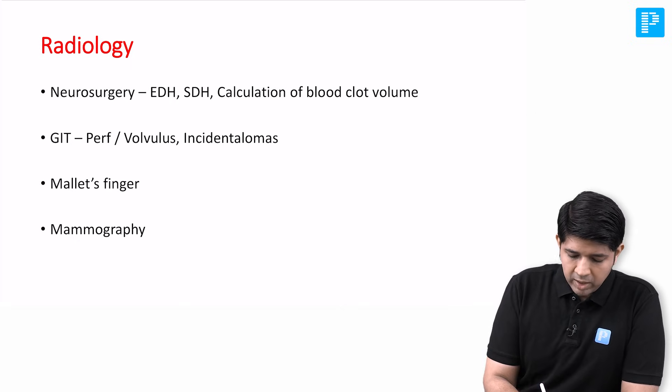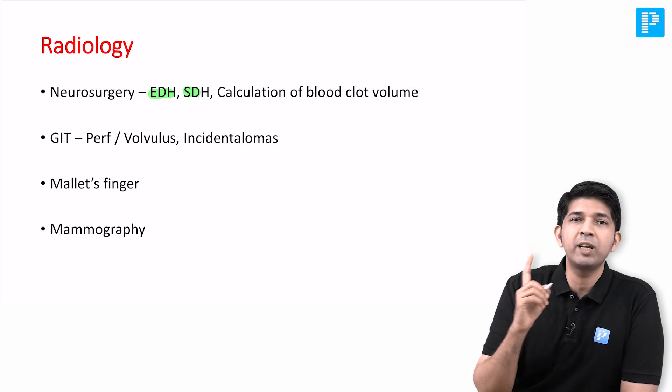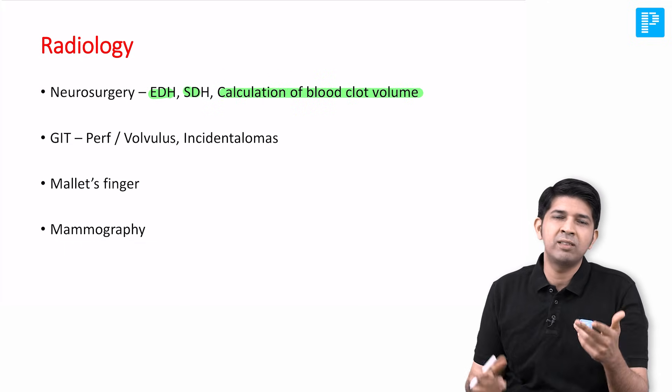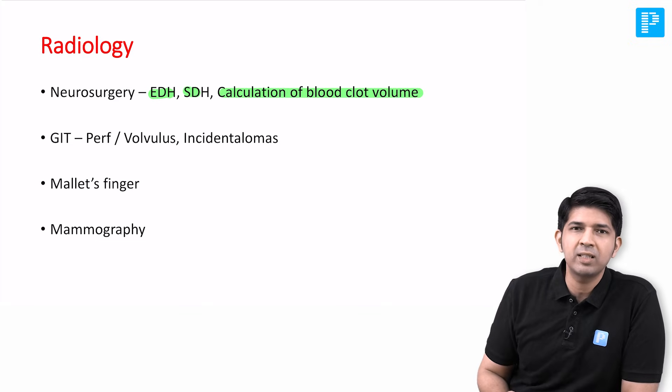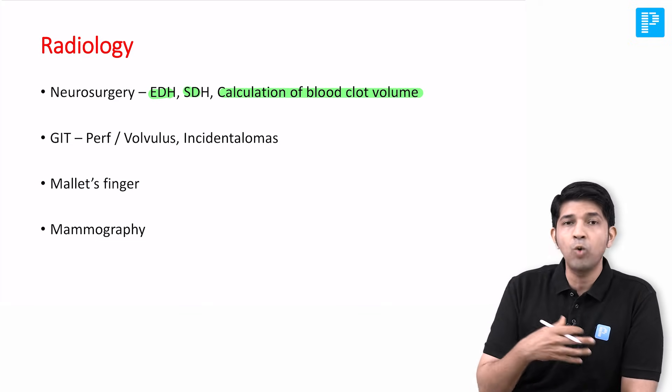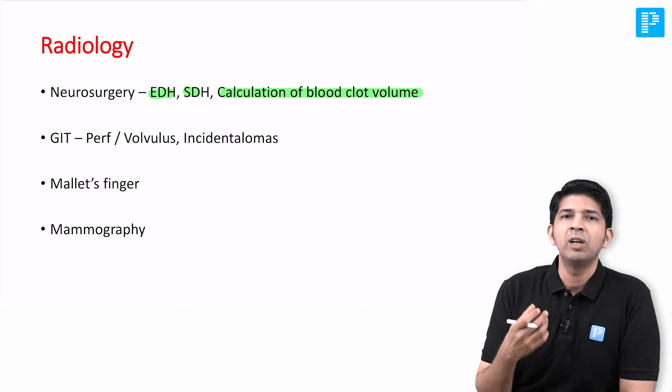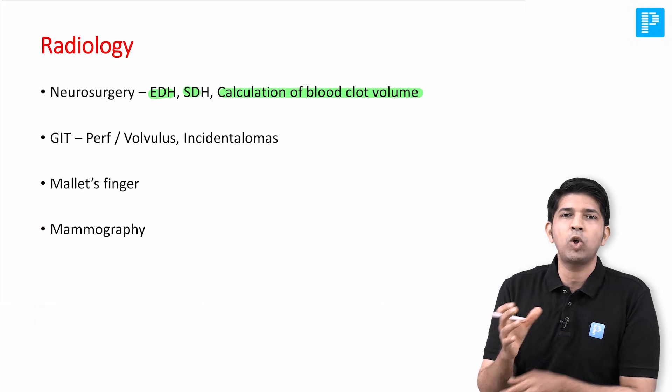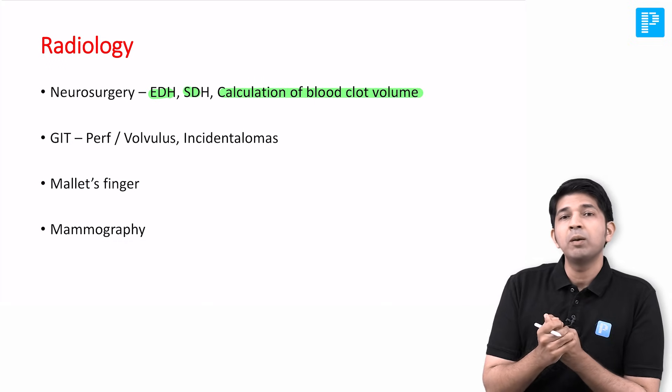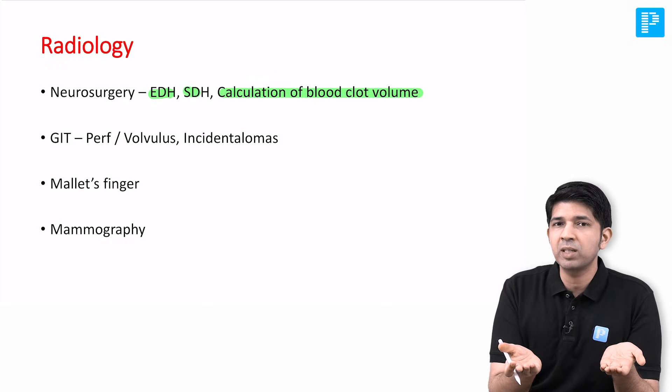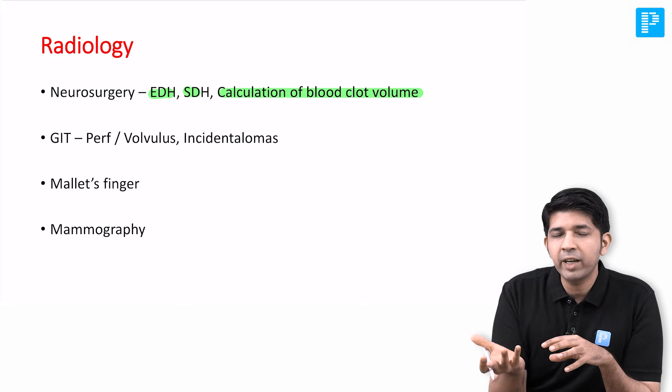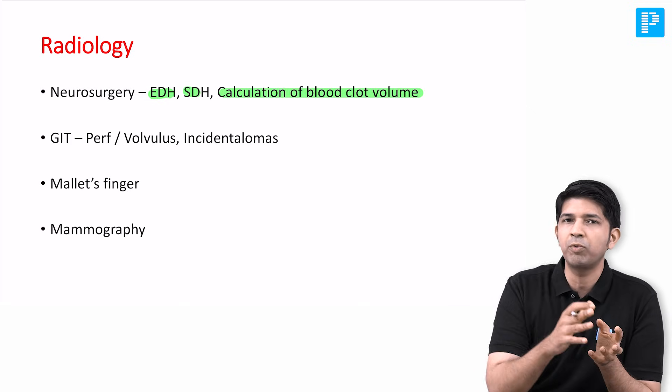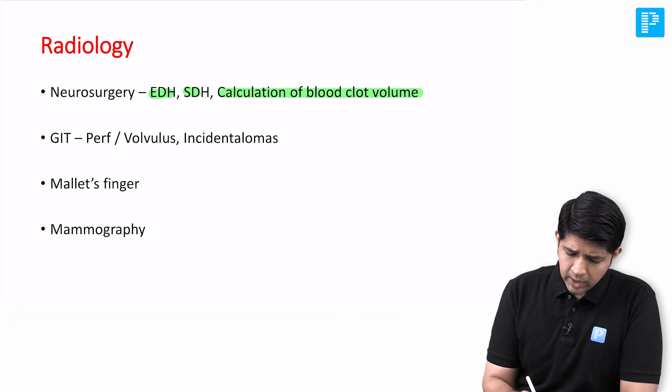As usual, neurosurgery made there was EDH, SDH, but one purely radiological question - that was calculation of the blood clot volume. They had given you the length, the width, the thickness, and the number of slices and asked you to calculate the blood volume. So this was an out-and-out radiology question which normally we tend to miss as surgeons. Then in GIT, there was one particular case where there was a toss-up between esophageal perforation versus gastric volvulus, because in terms of symptoms both of them can present with similar symptoms. But there was the radiological image which was quite glaringly obvious. So this is one particular question where the image gave you more information than the stem of the question.